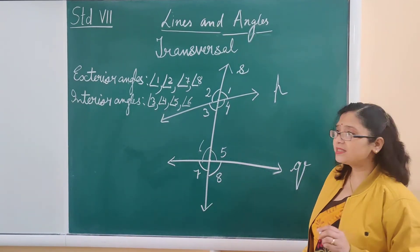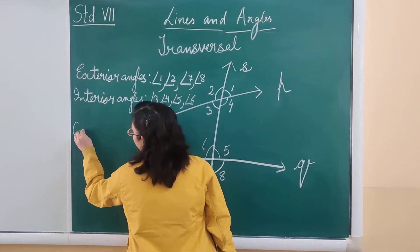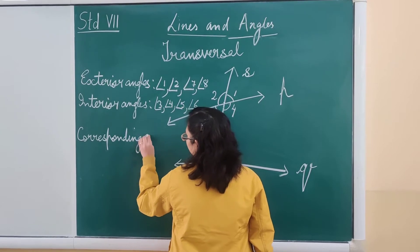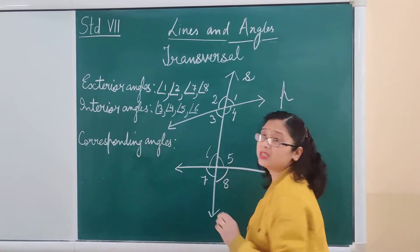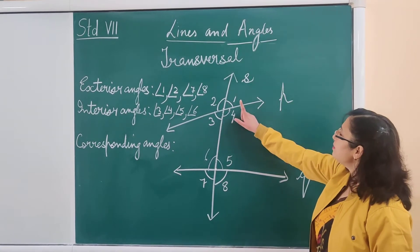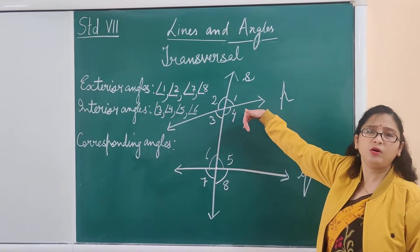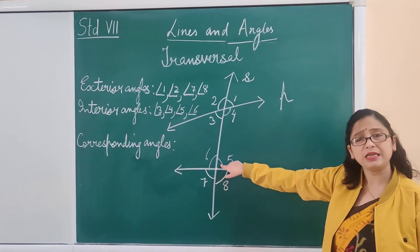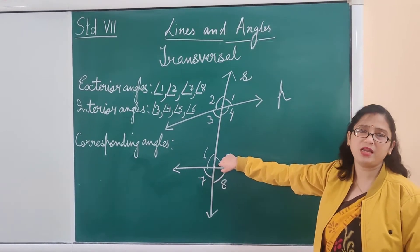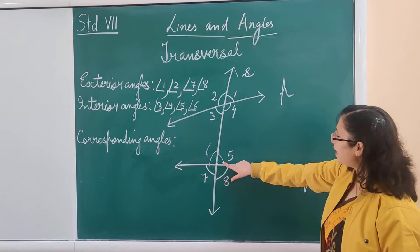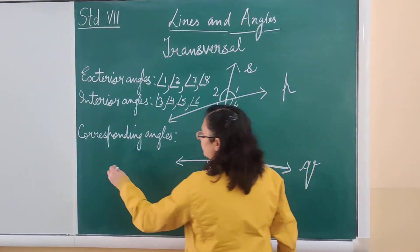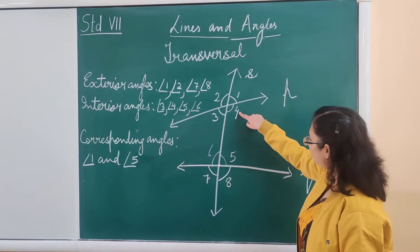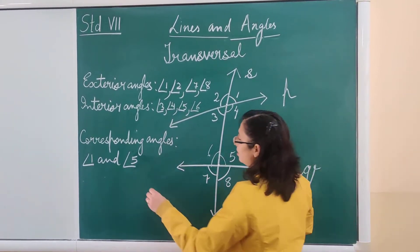The next type of angles are corresponding angles. Angles which are on the same side of the transversal, where one is towards the exterior and the other interior, are known as corresponding angles. On the right side: angle 1 and angle 5 are corresponding angles, and angle 4 and angle 8 are also corresponding angles.